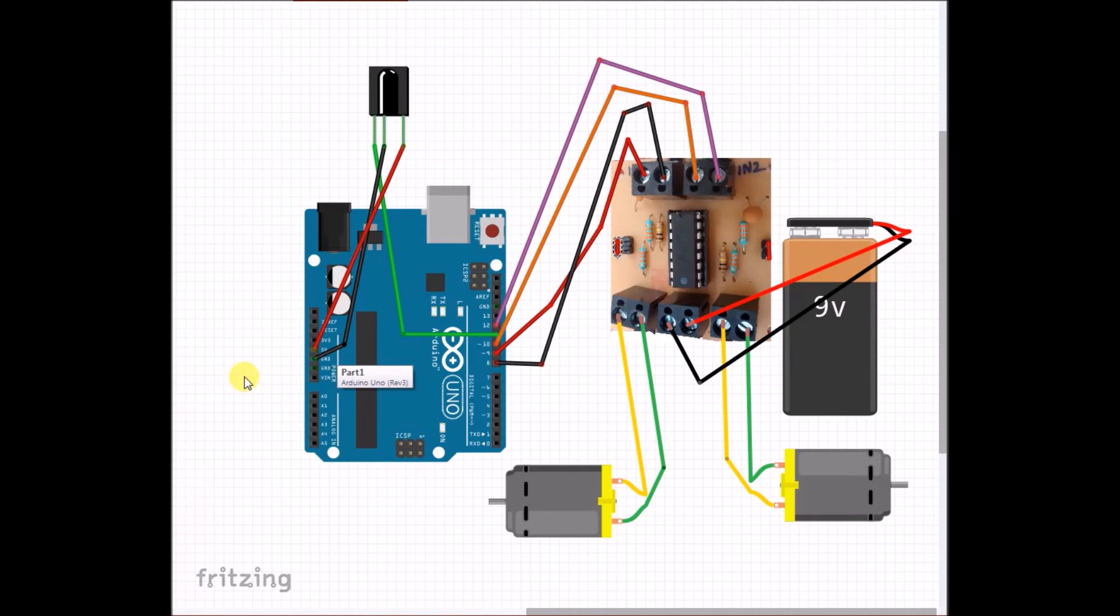So the way this whole setup works is that I am using two pins on the Arduino to control each motor. So you might be knowing that if you want to change the direction of a motor, you just need to change the polarity. So that's what we are doing, we are changing the highs and the lows in the program which will make the motors go forward and backward.